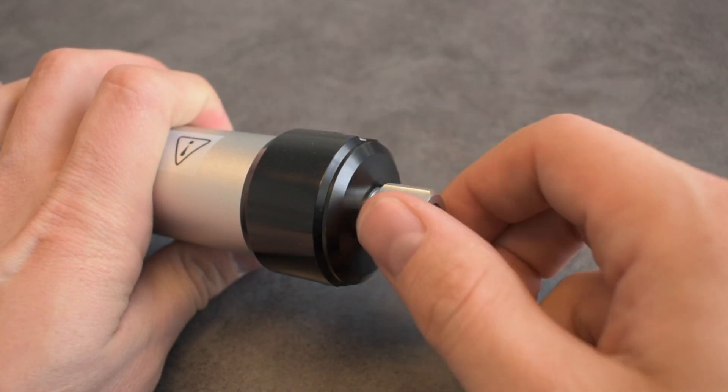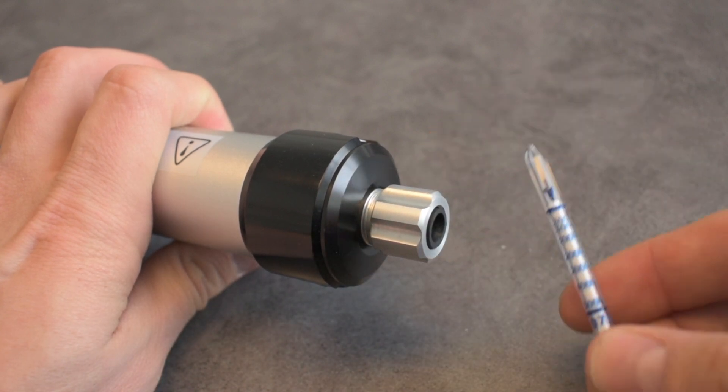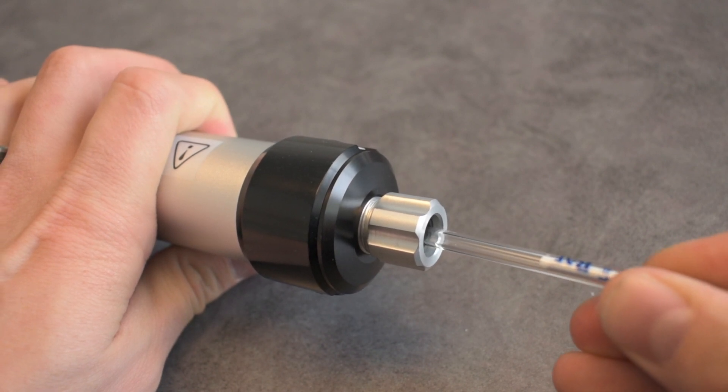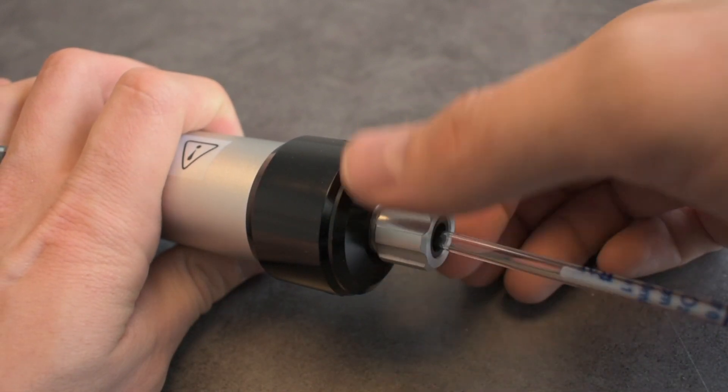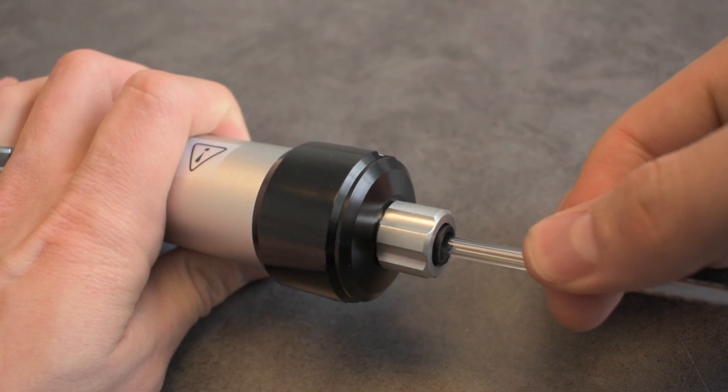Loosen off the pump inlet nut. Take note of the arrow on the tube to get the correct orientation. This arrow should point towards the pump inlet. Insert the tube until it bottoms out. Tighten the pump inlet nut until the tube is held securely in place.